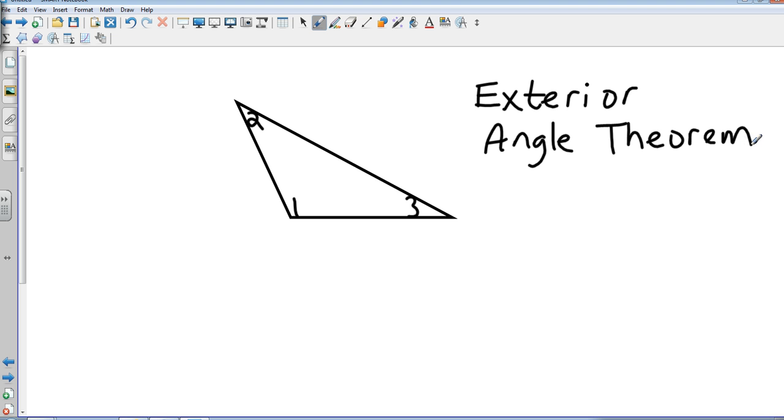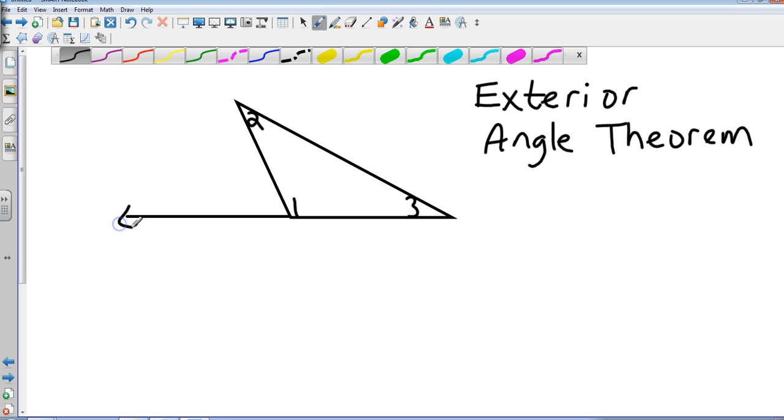The exterior angle theorem. What it states is if I create an exterior angle right here, let's call this angle 4 because it's on the outside of the triangle. The exterior angle theorem says the two angles that are not connected with that angle 4, if I add them together, so angle 2 plus angle 3, that's going to equal angle 4.